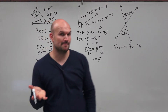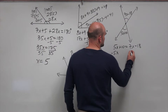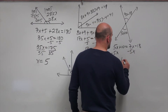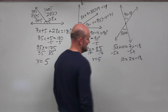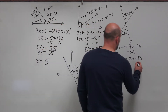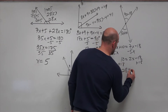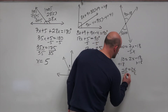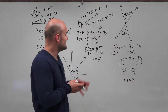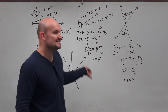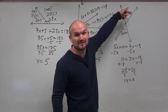Now I have a variable on both sides. I'll subtract 5x from both sides, giving me 10 = 2x - 18. Then I add 18 to both sides: 28 = 2x. Divide by 2 and I get x = 14. Since vertical angles are equal to one another, I only need to find the measure of one angle.